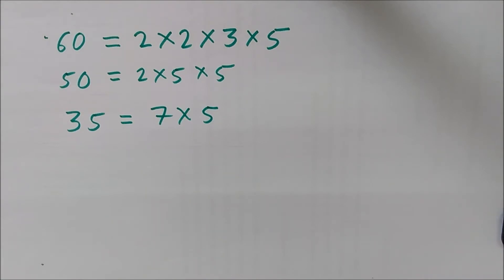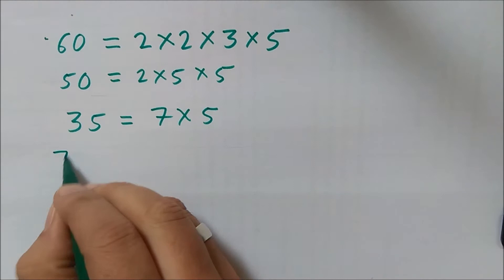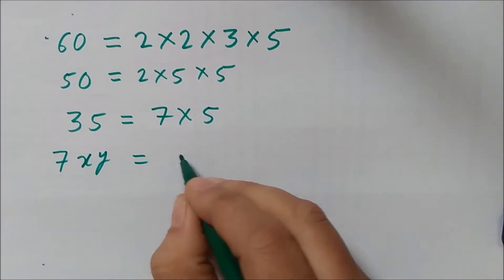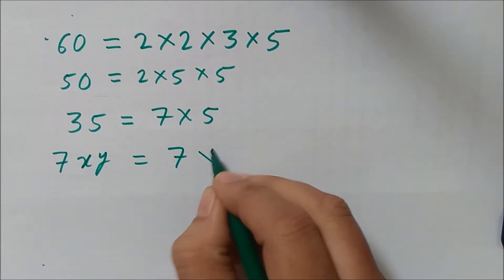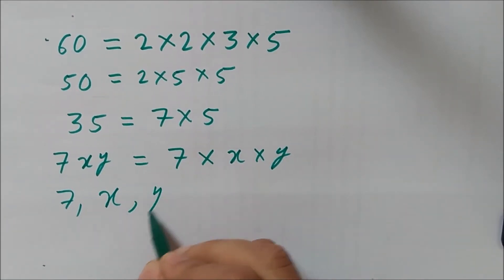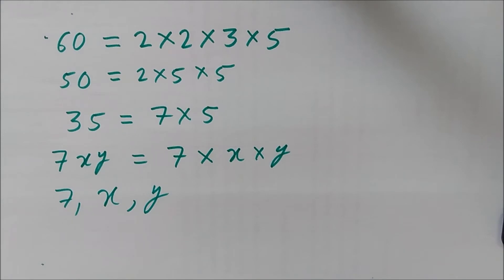Similarly, algebraic expressions also can be written as products of their factors. Let us take an algebraic expression, say 7x into y. This can be written as 7 into x into y. So 7, x, and y cannot be further expressed as products of factors, so they are like prime factors in case of the mathematical expression.